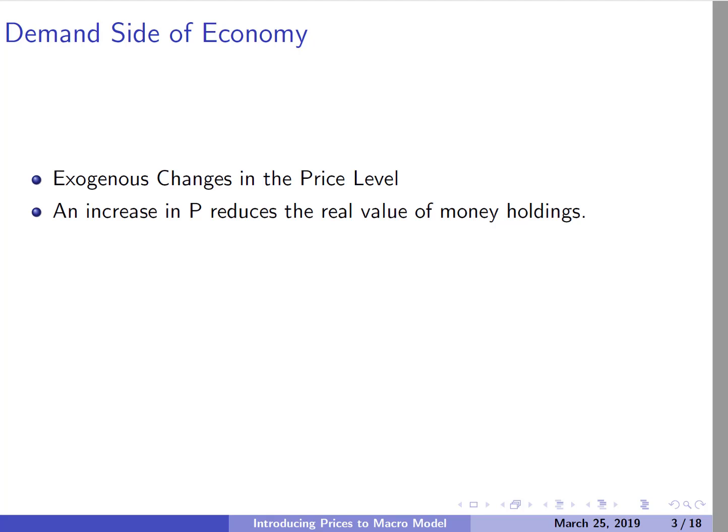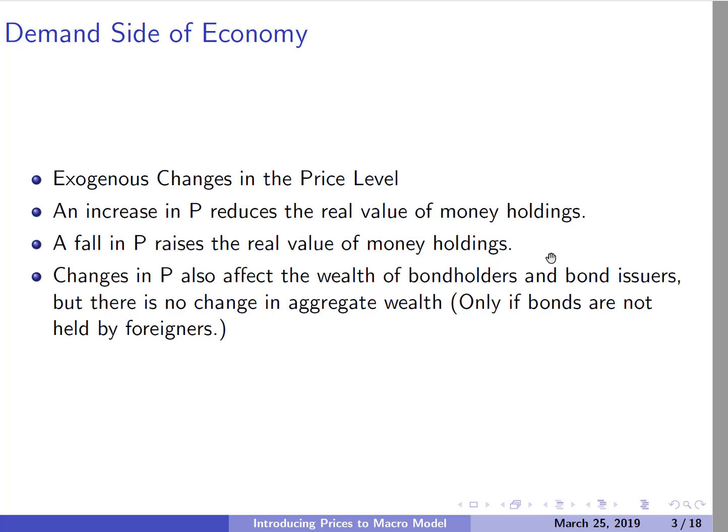Let's start thinking about the demand side of the economy and what happens when price levels change. We'll think of an exogenous change in price level - exogenous meaning it happens from outside the model. An increase in the price level is going to reduce the real value of money holdings. If you have a certain amount of money in the bank and the price level goes up by 10% or 20%, that money is worth less. A fall in the price level, on the other hand, is going to raise the value of real money holdings. The effect on bondholders and bond issuers will largely cancel out, so we'll assume the price level doesn't affect the bond market much.